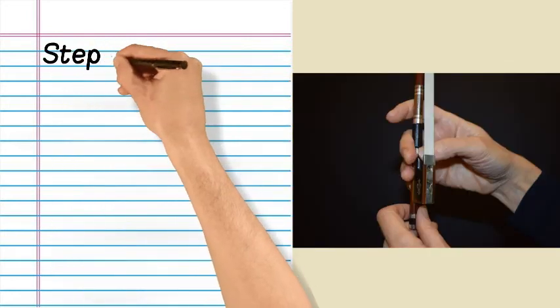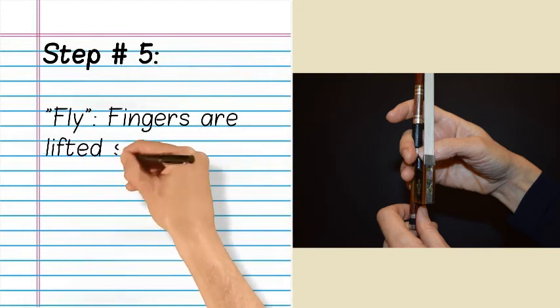Step number five: Fly. Fingers are lifted slightly off the bow.